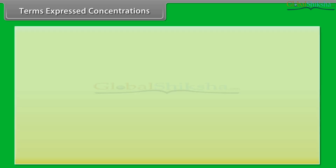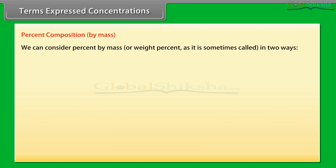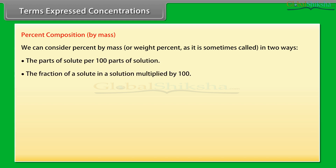Percent composition by mass can be considered in two ways: the parts of solute per 100 parts of solution, or the fraction of solute in a solution multiplied by 100. Percentage by mass equals mass of solute divided by mass of solution, multiplied by 100.